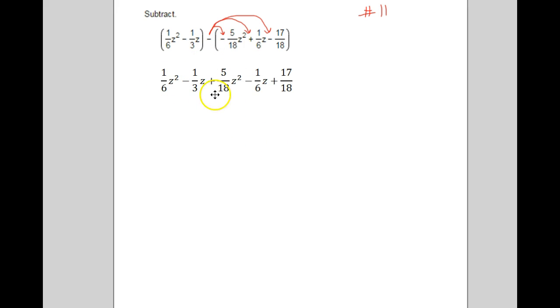Alright, now remember, notice we got a z squared, a z squared, a z and a z, and then this constant term, so we've got common or like terms. So the 1/6 z squared I got in yellow here, the 5/18 z squared I got that in yellow also to indicate they're the same. The 1/3 z and the 1/6 z, they're the same as well.